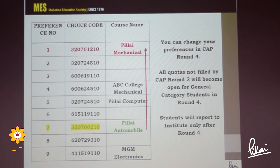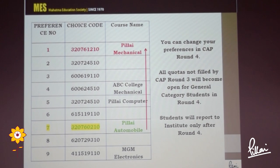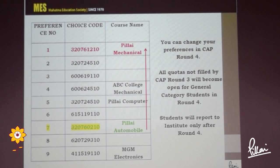What we are recommending is: in the first round itself, put your options correctly and then just select float until you reach the highest allotment. You don't have to change anything in the fourth round — just keep selecting float until you get the final allotment. The important thing is that you should be sure that if you get a higher-preference college, you will definitely go there. That is the most important thing. This step starts tomorrow for most engineering students and will go on until the 25th.